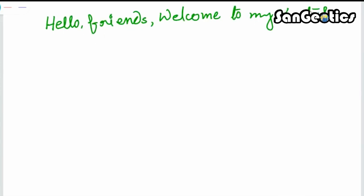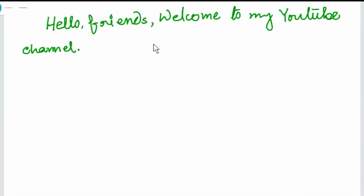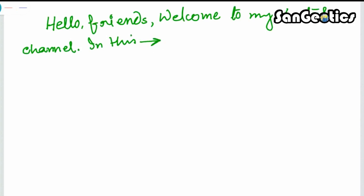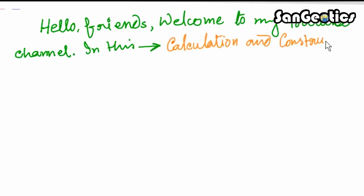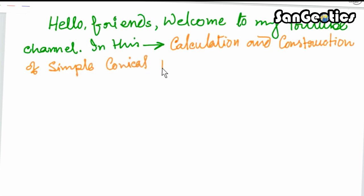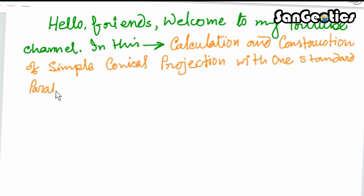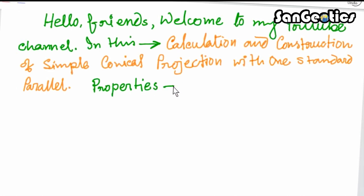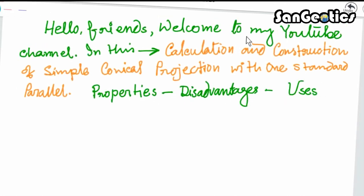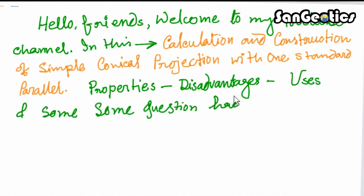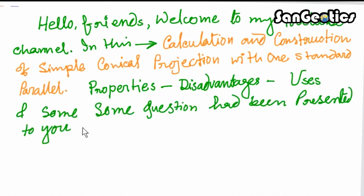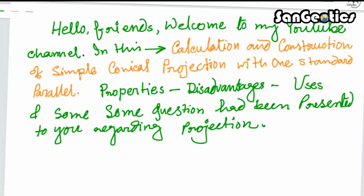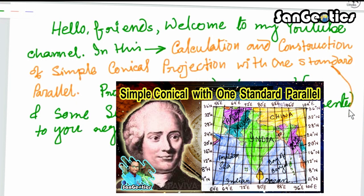Hello friends, welcome to my YouTube channel. In this video I am going to discuss a new topic: the calculation and construction of simple conical projection with one standard parallel. I will also describe different properties, disadvantages and uses of this projection. Some questions will be presented at the ending portion of this video. This is the fourth lesson of the map projection series.